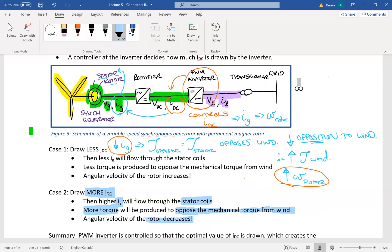So this is not our most common wind turbine type, but I think it's really important to go through this diagram and go through this thought process here of why does the rotor speed change in the opposite direction to the current that gets controlled by that pulse width modulated inverter.